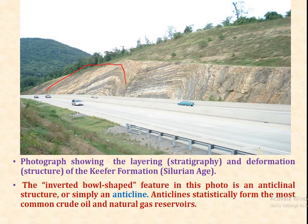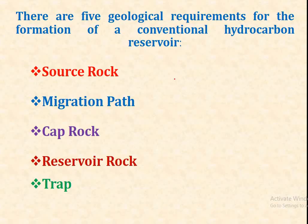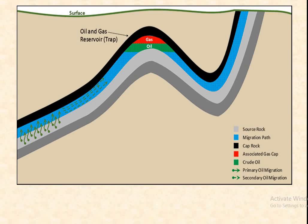These inverted bowl-shaped structures are anticline structures, and anticlines statistically form the most common crude oil and natural gas reservoirs. There are five geological requirements for the formation of a conventional hydrocarbon reservoir: the first is the source rock, second is the migration path, third is the cap rock, fourth is the reservoir rock, and fifth is the trap. We will discuss each one in turn, and here is the diagrammatic representation of all these requirements of petroleum geology.